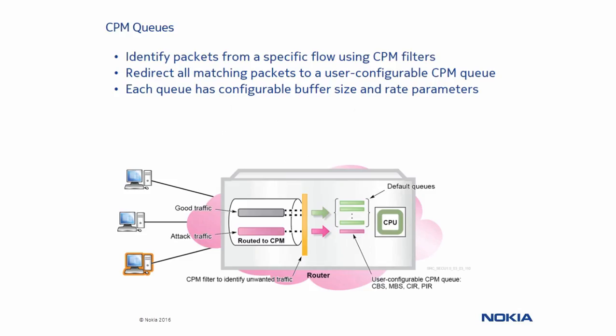Our first discussion on queues is CPM queuing. CPM queuing allows an operator to restrict the resources allocated for certain traffic passed to the CPU. An operator can identify packets from a particular flow using CPM filters and then direct these packets to a user-defined CPM queue. Each queue has a configurable buffer size and configurable rate limits that allow an operator to specify how much traffic from that particular flow is processed by the CPU.